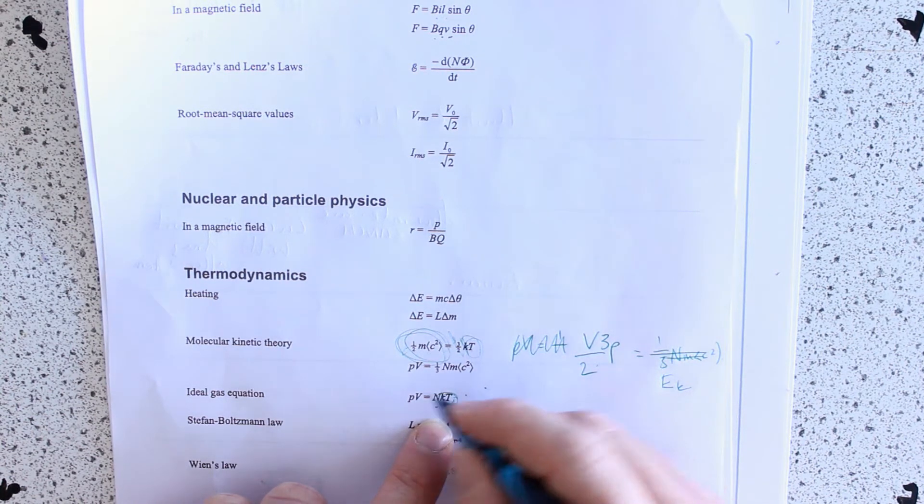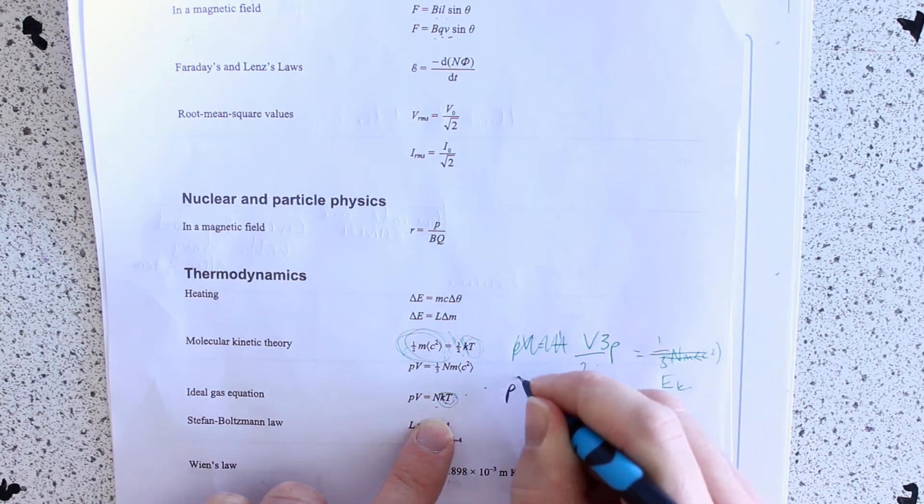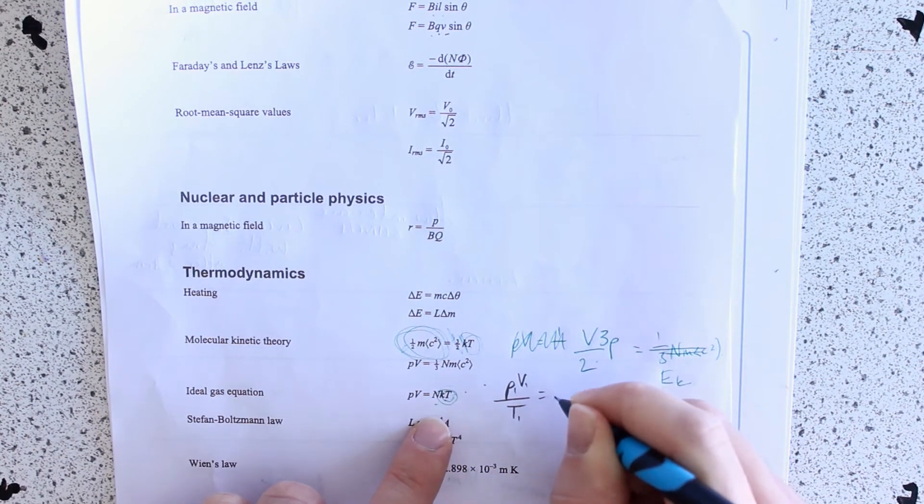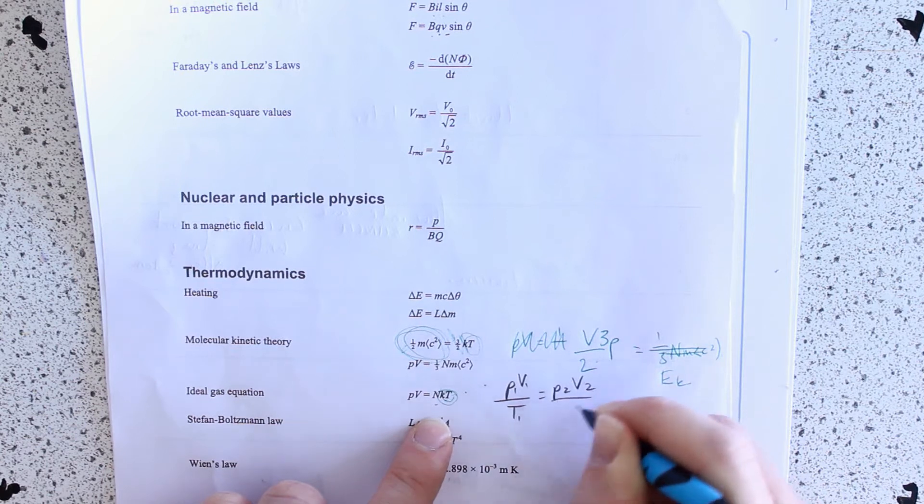And memorize it in its various forms. So, PV over T, I'll make that all 1, 1, 1, is equal to P2V2 over T2.